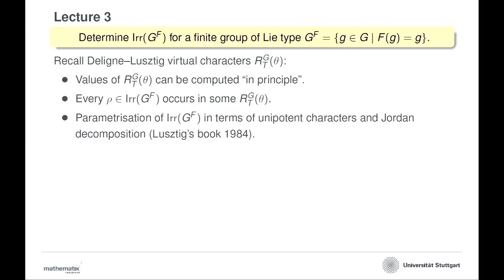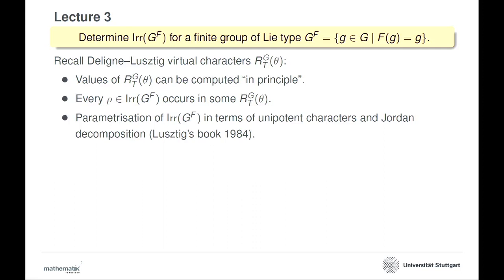By developing this whole theory you can get a parameterization of the irreducible characters in terms of unipotent characters and what I call the Jordan decomposition. In the end you can parameterize all irreducible characters by using unipotent ones for G itself and a collection of smaller groups.